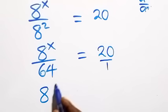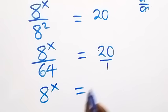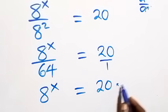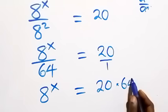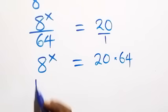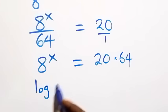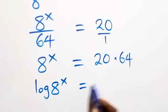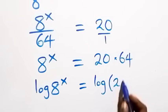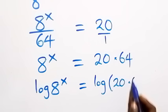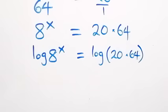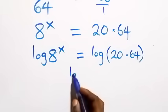We write 20 as 20 over 1, and when we cross multiply, 8 raised to power x times 1 equals 20 times 64. From here, the next step is to take the log on both sides: log of 8 raised to power x equals log of 20 times 64.